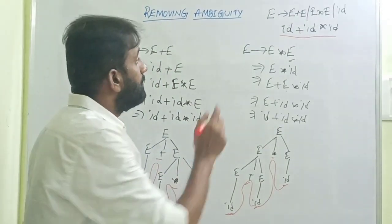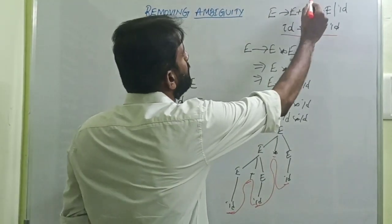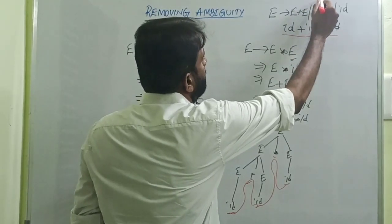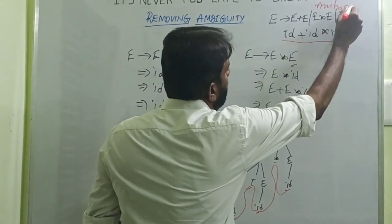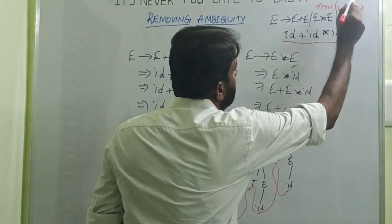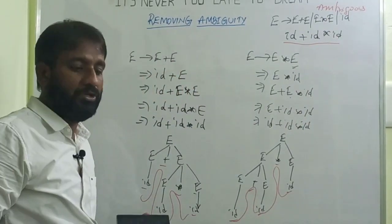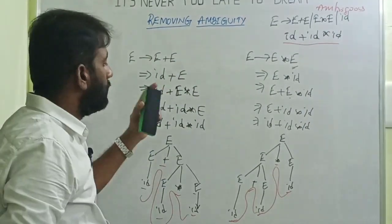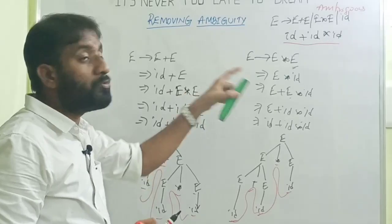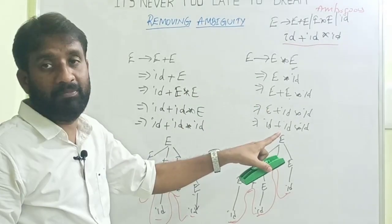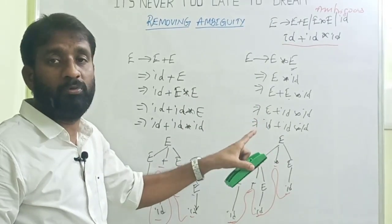For the same string id+id*id, there exist more than one parse tree — this is one parse tree and this is another parse tree. That's why this grammar is an ambiguous grammar. Our topic is how to remove ambiguity — meaning how to eliminate one parse tree from the grammar so that there exists only one parse tree, only one leftmost derivation, and only one rightmost derivation.